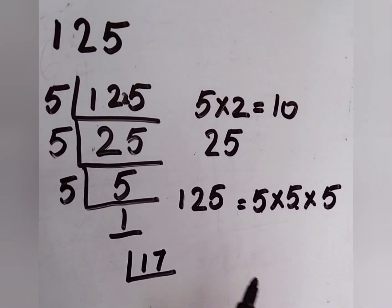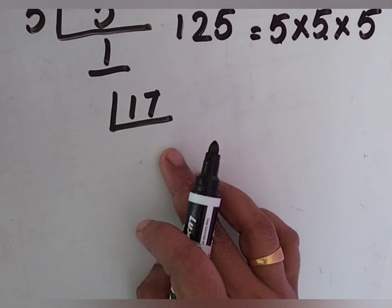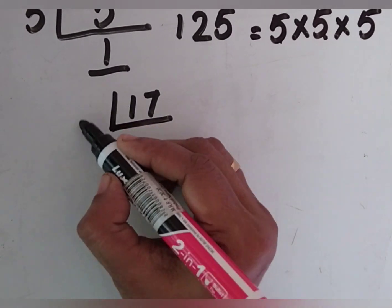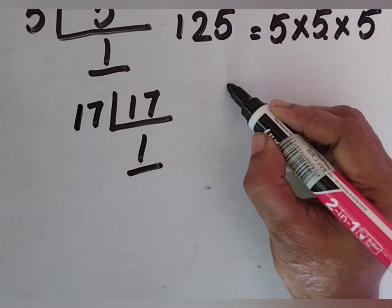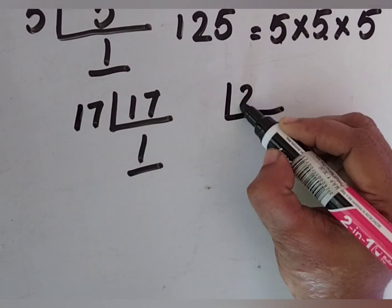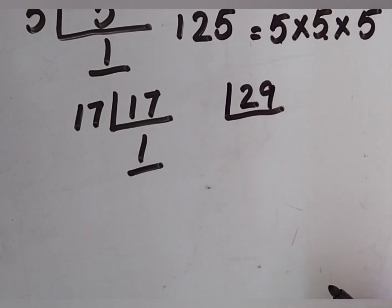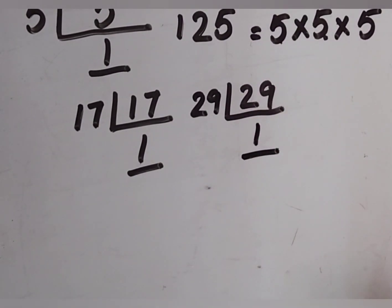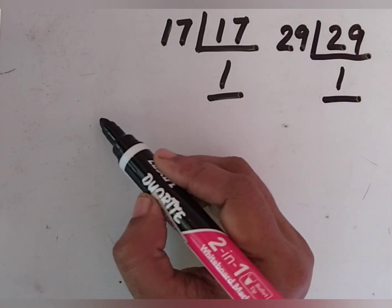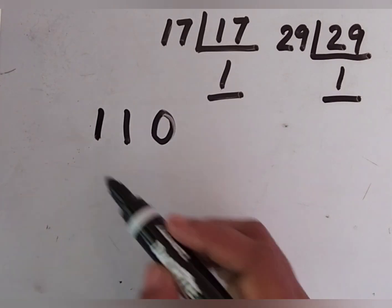Now, if you are given any prime numbers — how to do 17? 17: 17 × 1 = 17. And 29: 29 × 1 = 29. These numbers don't have any other factors, so we can do the prime factorization like this.